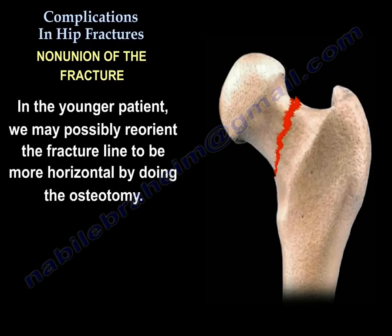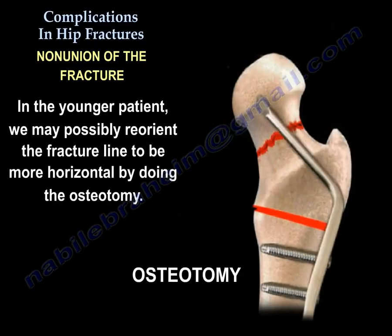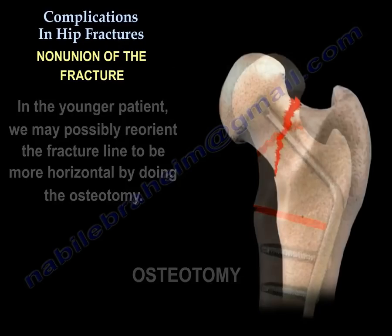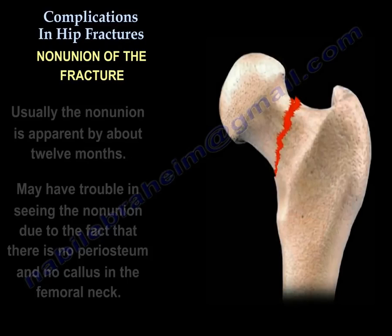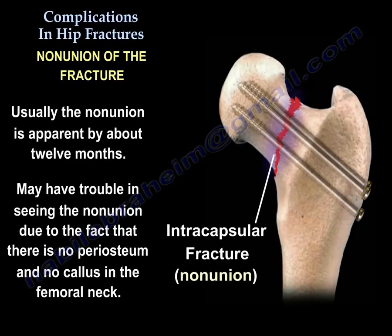In the young patient, we may reorient the fracture line to be more horizontal by performing the osteotomy. This nonunion is usually apparent by about 12 months. We may have trouble seeing the nonunion because there is no periosteum in the femoral neck.